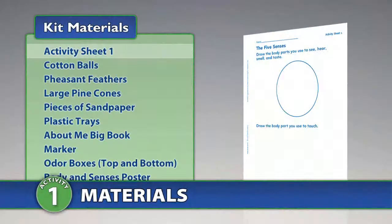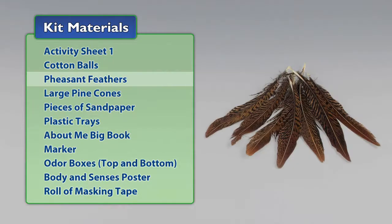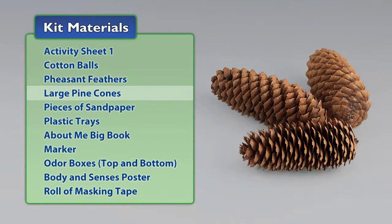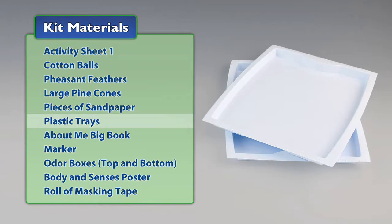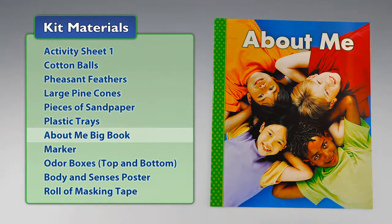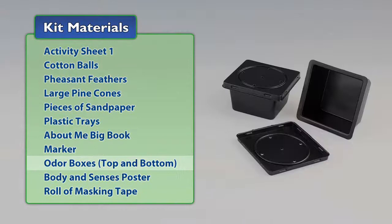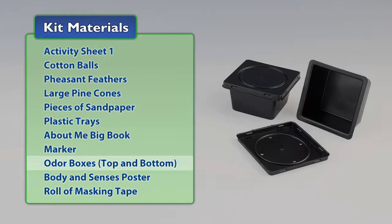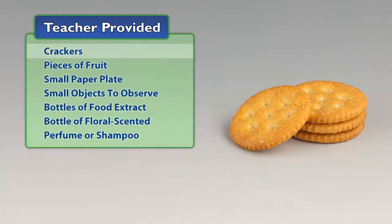From the kit, you will need activity sheet one, cotton balls, pheasant feathers, large pine cones, pieces of sandpaper, plastic trays, About Me Big Book, marker, odor boxes each with a top and bottom, body and senses poster, and a roll of masking tape.